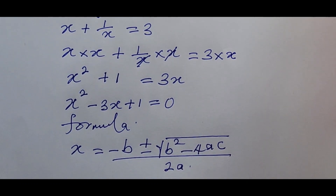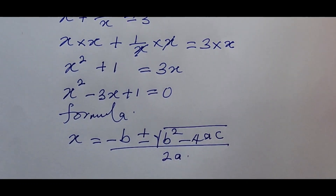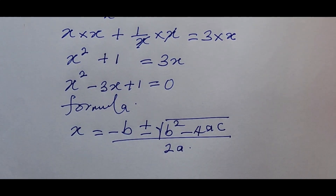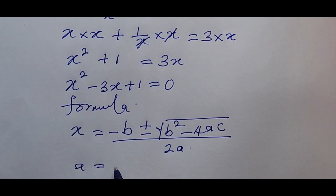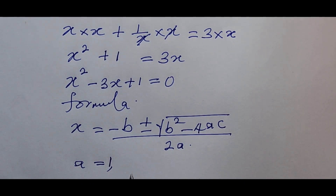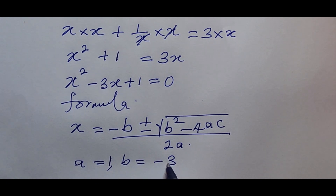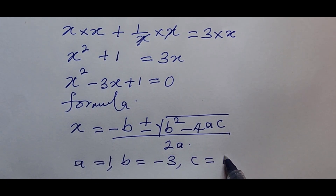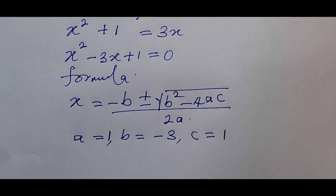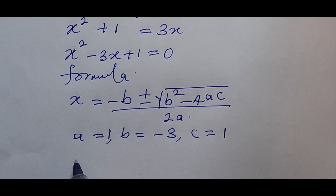We just have to identify the values of a, b, and c in the equation. The value of a is equal to one, which is the coefficient of x squared. The value of b is the coefficient of x, which is minus three. And the value of c is the constant term, which is positive one.